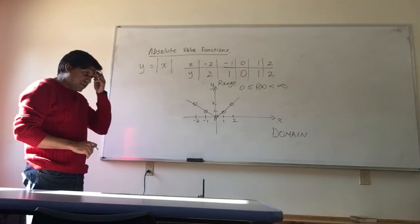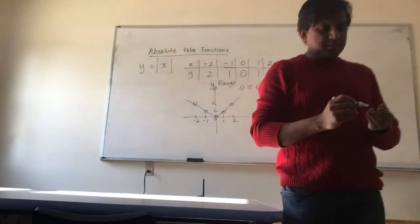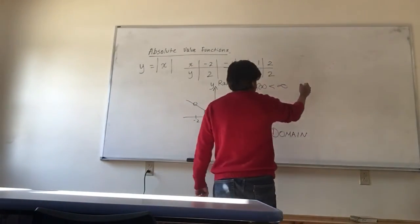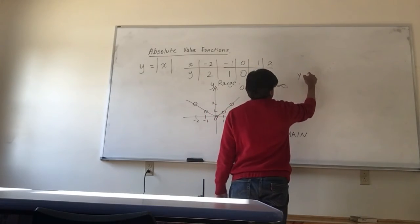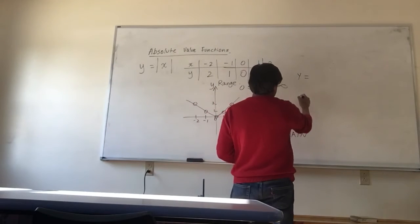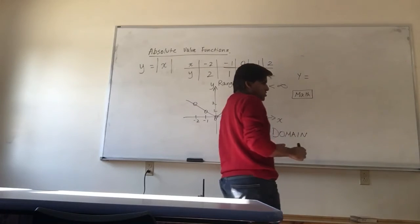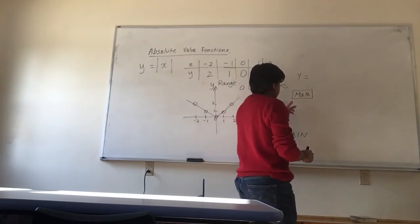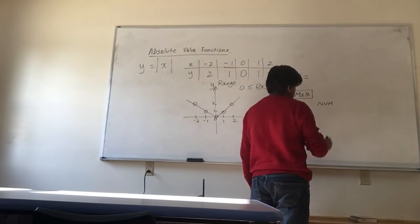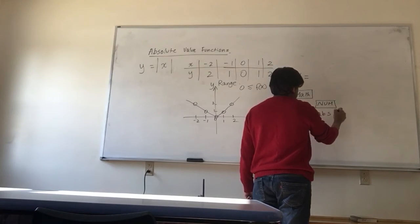And how would we do this on the calculator? We'll use our calculator and we'll go to that same Y function. And if you look at the math function, there is a button with math. And then on top, when you click the math button, you'll see N-U-M at the top. So click that and you'll come to 1 which says A-B-S with a parenthesis.